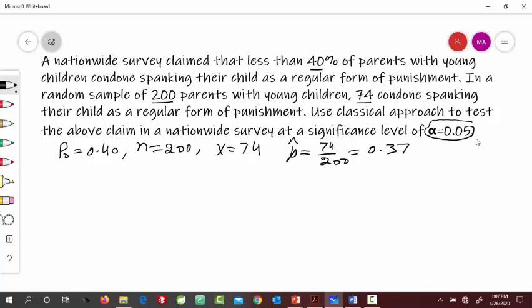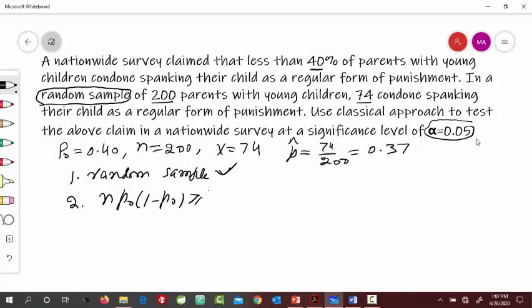Before we perform this testing, first we have to check those three conditions which are required. First condition is that the sample is a random sample, and it's given here that the sample is a random sample, so this is true. Second condition is N times P0 times 1 minus P0 should be greater than or equal to 10. We can check that. N is 200, P0 is 0.40, and this is going to simplify to 48 which is definitely greater than 10. So the second condition is also true.